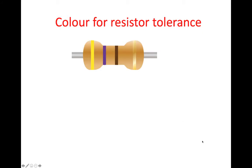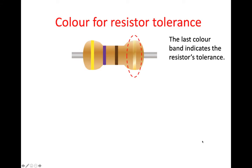Now let's look at how we actually use them on a resistor. Here we have a diagram of a resistor and it's got four colour bands on it. We can see that three of them tend to be grouped together and we have one on the right-hand side that seems to be a little bit further away. This last one represents the tolerance band and it indicates the resistor's tolerance.